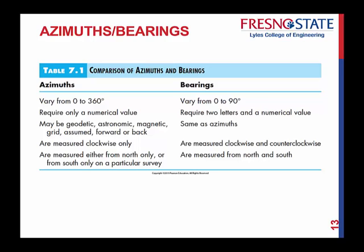Comparing azimuths and bearings: azimuths go 0 to 360; bearings go 0 to 90 degrees. Azimuths require just a numerical value — no direction letters needed. Bearings require two letters (NW, SE, etc.) to tell you the exact direction. Azimuths are always measured clockwise; bearings can be measured clockwise or counterclockwise depending on the reference meridian. Azimuths are measured from north only; bearings are measured from north and south.